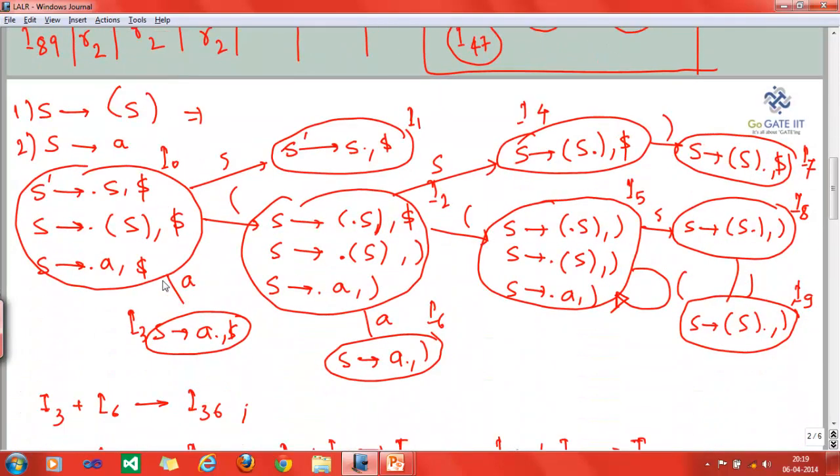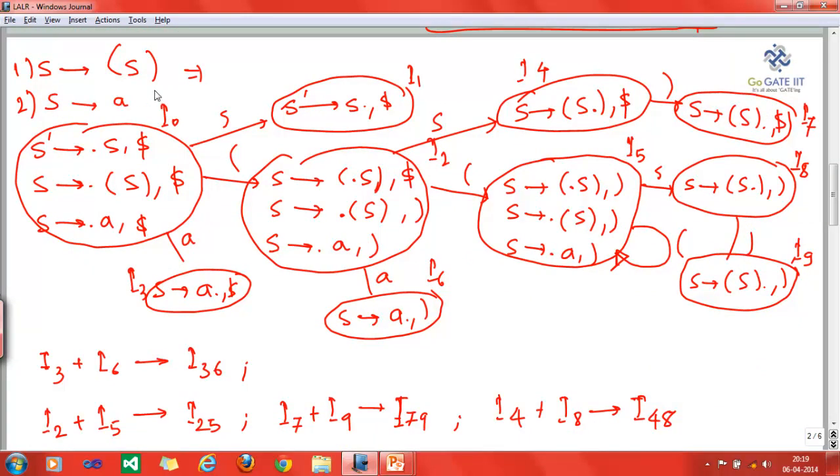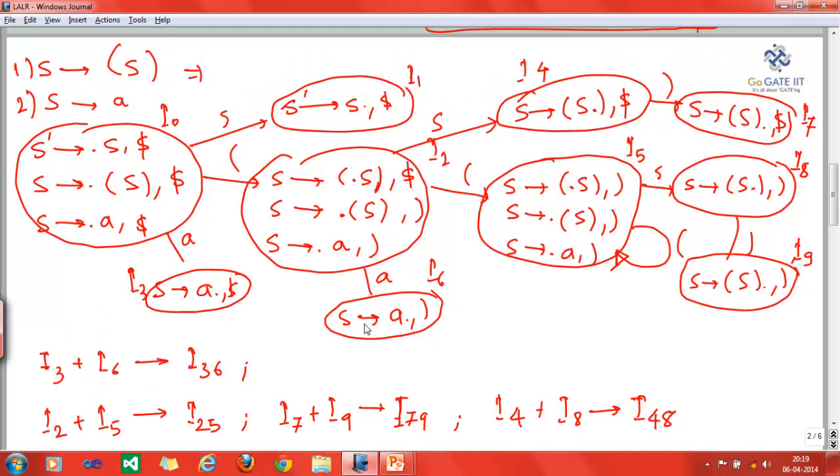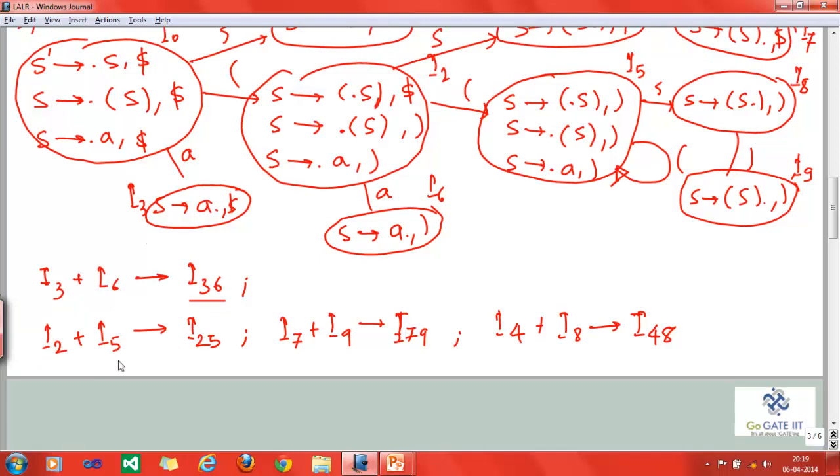Moving ahead with the same problem, which we solved—the second problem which we solved in case of CLR parser. Again, you can see that we have already constructed the CLR parser here and we can see that I3 and I6. I3 is this one: S gives A dot with dollar. And I6, where is I6? This one is I6 with the closing bracket. So we can combine and we can give I36.